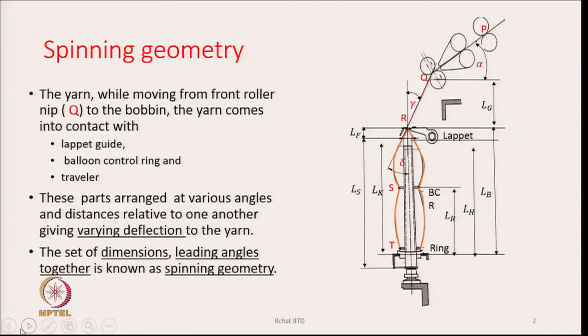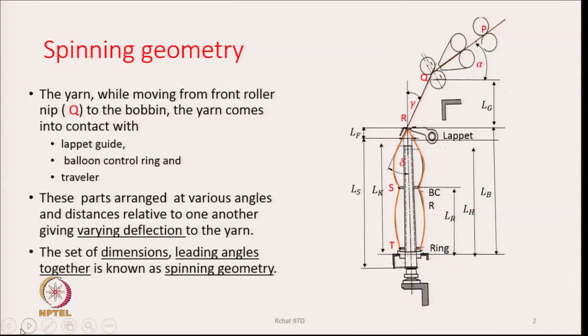Today we are going to discuss spinning geometry. The first question that comes to mind is: what is spinning geometry? If you see the diagram on the right hand side, you can see the thread path from the drafting system to the bobbin. As we look at this thread path, we see that the yarn path is deflected at different points.